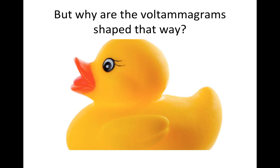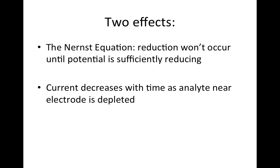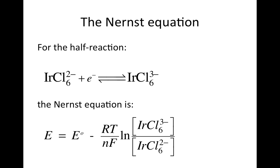What I want to talk about now is why voltammograms are shaped the way they are — some people think they're shaped like ducks. There are two effects at play. The first is an equilibrium effect described by the Nernst equation: reduction can't occur until the potential on the electrode is sufficiently reducing. The second is a transport effect: the longer you have a reducing potential on the working electrode, the more you deplete the analyte near the electrode, so current is limited by the rate of transport of analyte to the electrode.